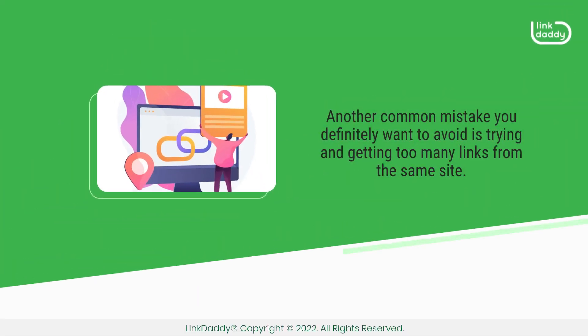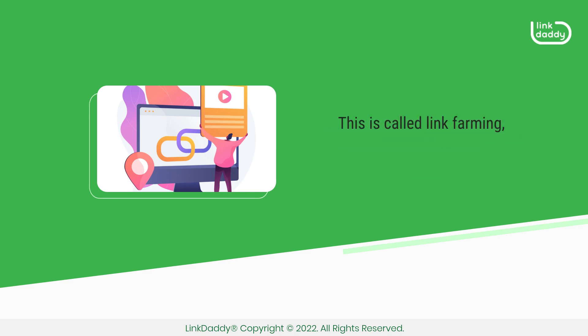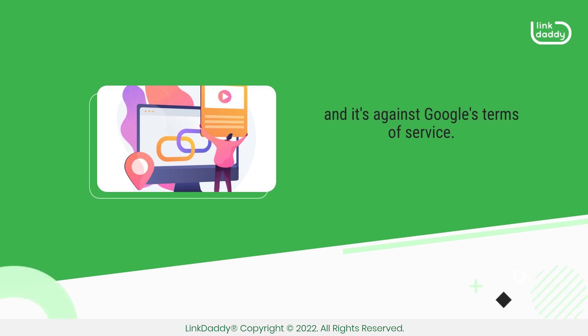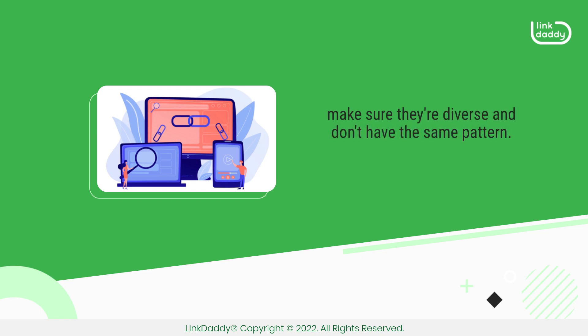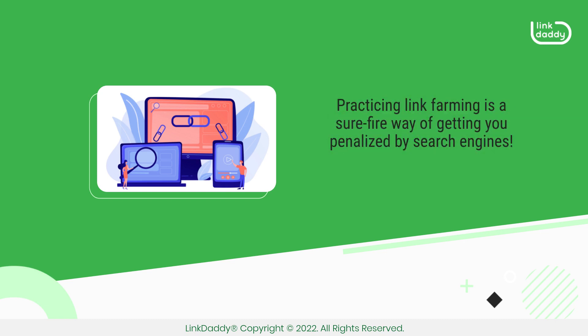Another common mistake you definitely want to avoid is trying to get too many links from the same site. This is called link farming, and it's against Google's terms of service. If you're looking for backlinks on other sites, make sure they're diverse and don't have the same pattern. Practicing link farming is a sure-fire way of getting you penalized by search engines.